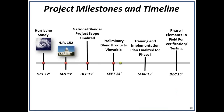Dr. Uccellini provided background on how this project was born from the Sandy Supplemental and other historical portions, going back to the Sullivan office where this initiative began. The scope of the project was finalized last December, and MDL provided us the website to view the initial national blend product just a few short months ago. There is an expectation to have the training and implementation plan finalized by March and to have the national blend available in GFE by the end of December 2015.